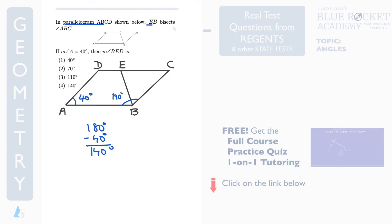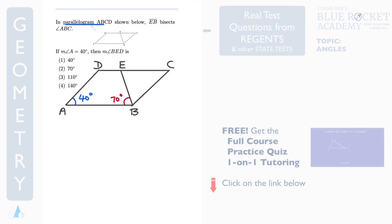EB bisects angle ABC, so this part is cutting this angle into two equal parts — each is half of 140, which is 70 degrees. Now because it's a parallelogram, if you think of these as parallel lines with this as your transversal, and this angle is 70, then this angle also has to be 70. These are alternate interior angles.